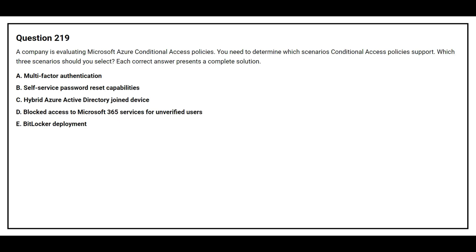Question number 219. A company is evaluating Microsoft Azure Conditional Access policies. You need to determine which scenarios Conditional Access policies support. Which three scenarios should you select? Option A: multi-factor authentication. Option B: self-service password reset capabilities. Option C: hybrid Azure Active Directory joined device. Option D: blocked access to Microsoft 365 services for unverified users. Option E: BitLocker deployment. The correct answers are Option A (multi-factor authentication), Option C (hybrid Azure Active Directory joined device), and Option D (blocked access to Microsoft 365 services for unverified users).